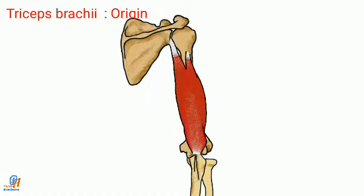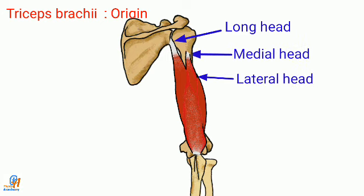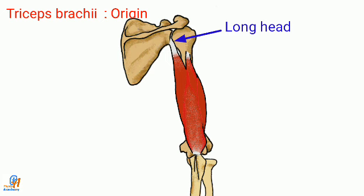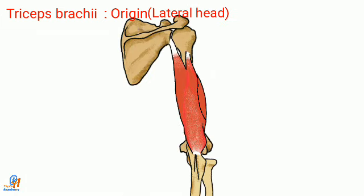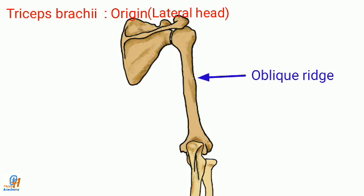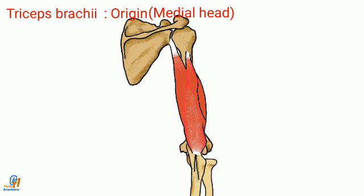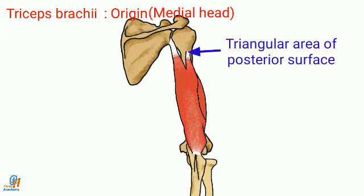Moving to the back of the arm, there is only one muscle called triceps brachii. The triceps muscle has three heads: the long head, which is the longest of the three; the lateral head; and the medial head. The long head arises from the infraglenoid tubercle of the scapula. The lateral head arises from the oblique ridge of the posterior surface of the humerus. The medial head arises from a large triangular area on the posterior surface of the humerus and from the medial and lateral intermuscular septa.